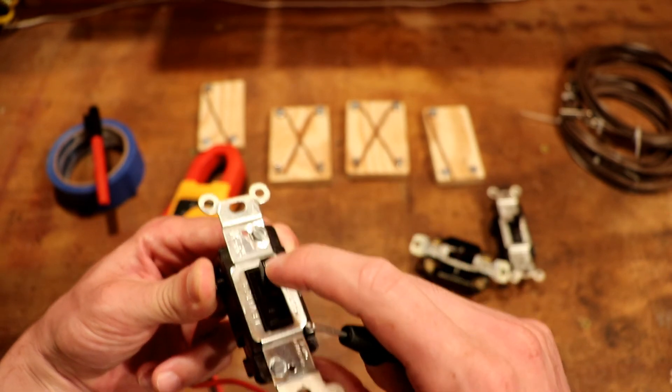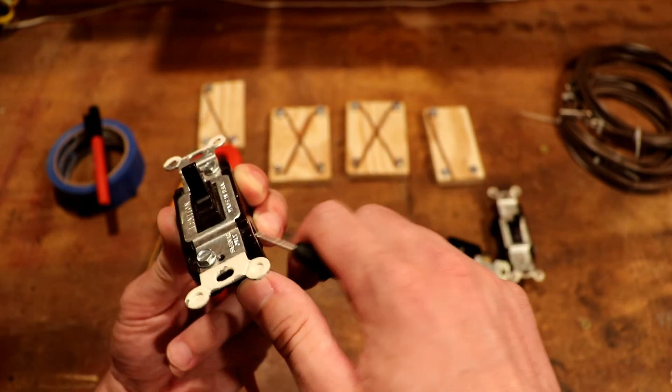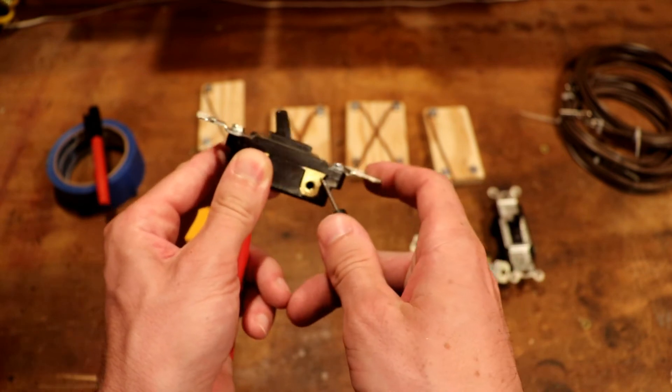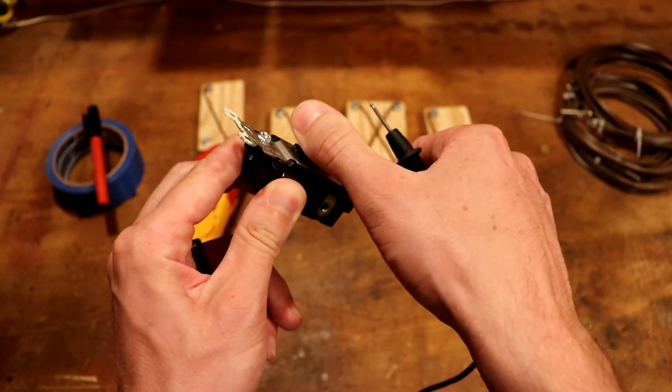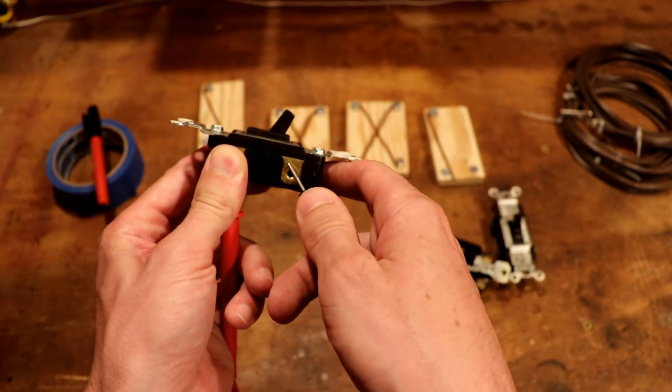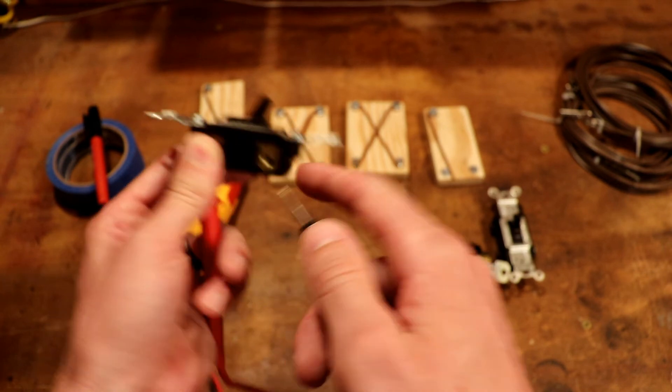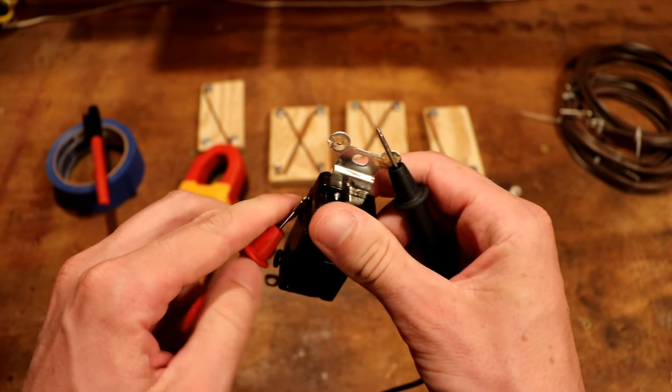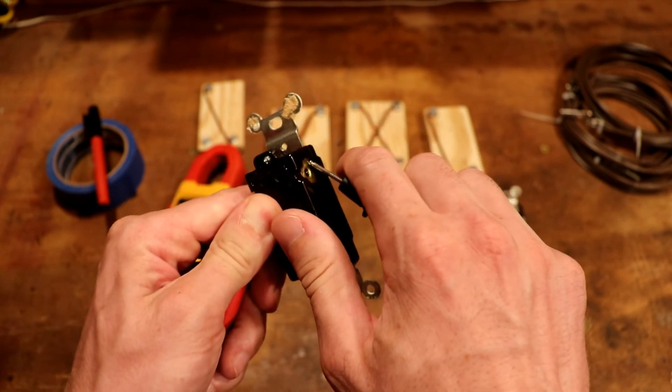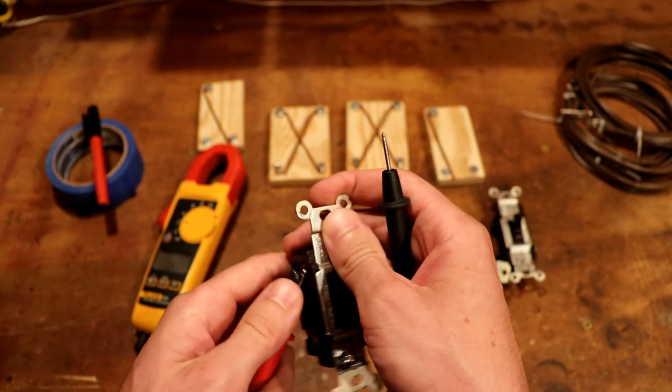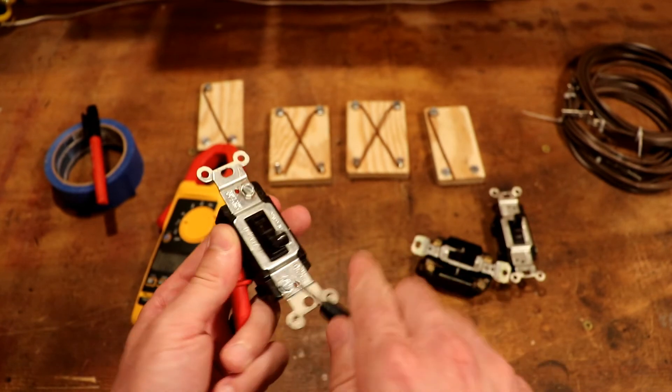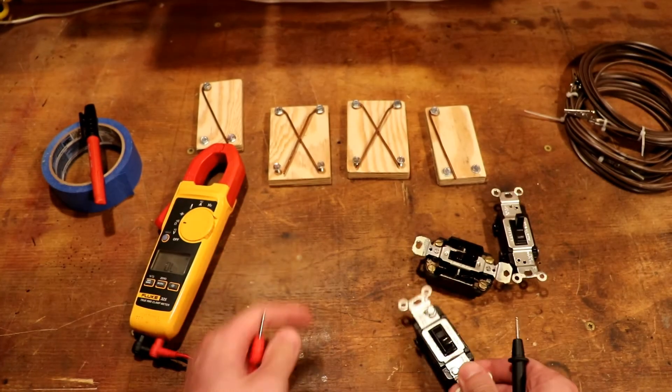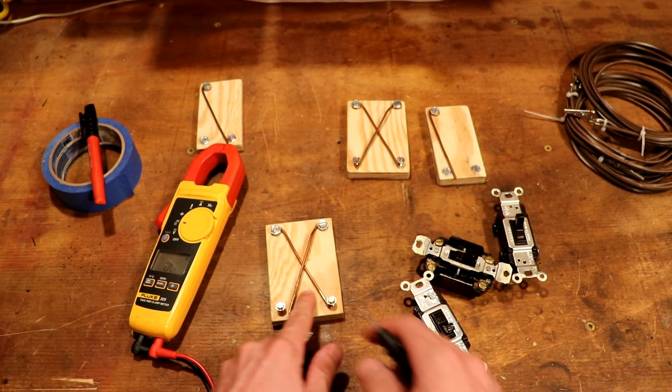So when the switch is flipped this way, there's continuity down here and then, but not here. So we should be able to flip the switch and have that reversed. So now there's continuity between the common and this one, but not between the common and this one. You should never have continuity between these two switch lugs. That's a way to use your multimeter and confirm that the switches are working.